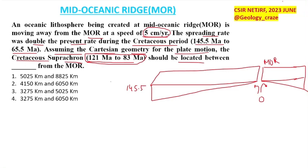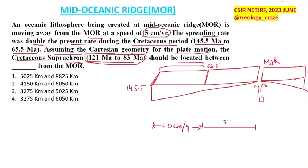On the diagram, I mark 145.5 Ma at this point. From here to a certain point is the zone of the Cretaceous period, where the speed is 10 centimeters per year — double the present rate. From a further point onward, the speed is 5 centimeters per year.